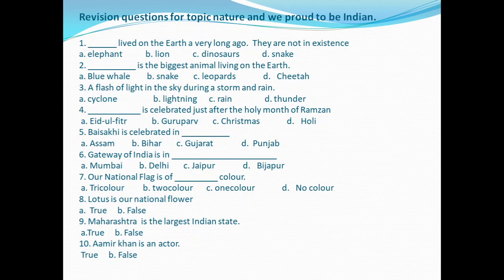Blue whale is the correct answer for the biggest animal living on Earth. Question 3: 'A flash of light in the sky during a storm and rain.' A flash of light in the sky during a storm and rain is lightning. So lightning is the answer for number 3.